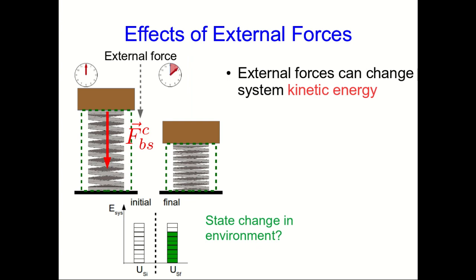We should identify a state change in the environment. In this case it's that the brick moved down, and so since the brick and the earth are both out in the environment, we can say that the environment has lost gravitational potential energy. So it's the gravitational potential energy in the environment that has become spring energy in our system.